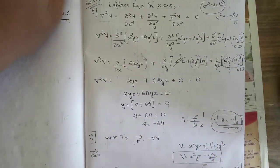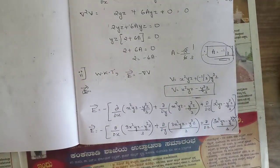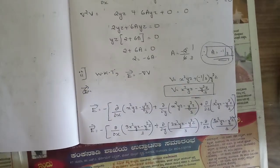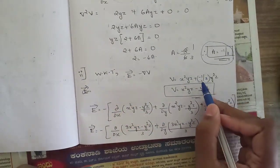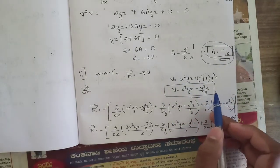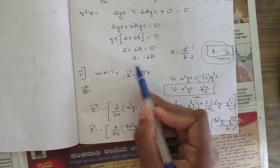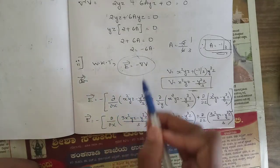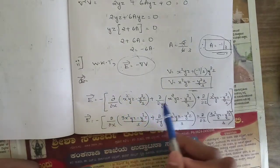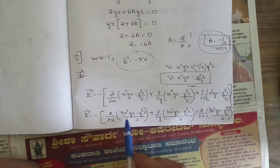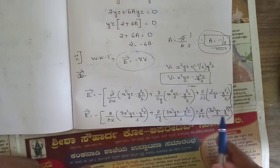For the second sub-question, find E. Rewrite V substituting a = −1/3: V = x²yz − y³z/3. Using the relation E = −∇V = −(∂V/∂x ax̂ + ∂V/∂y ŷ + ∂V/∂z ẑ). Taking LCM gives numerators of the form (3x²yz − y³z) / 3 for each component, then partially differentiating each.